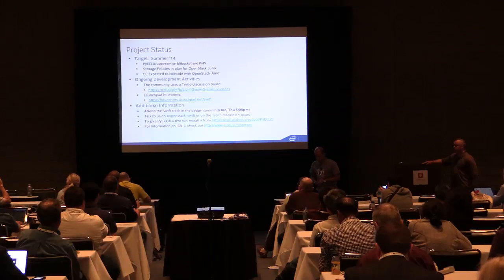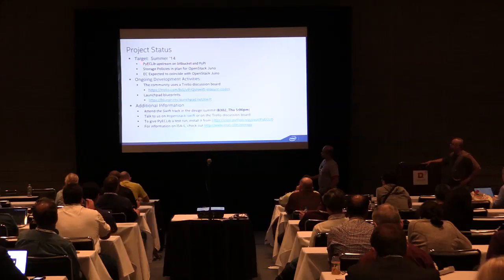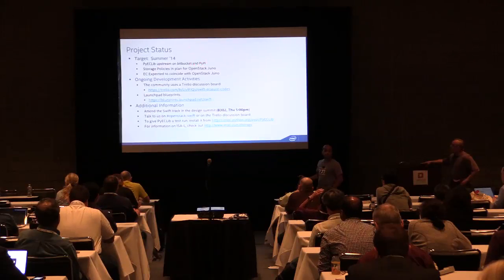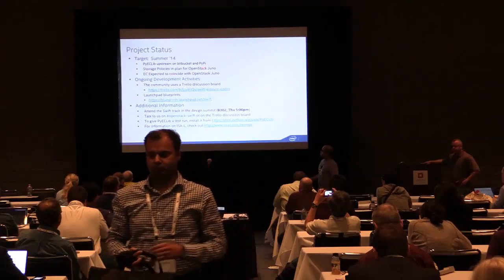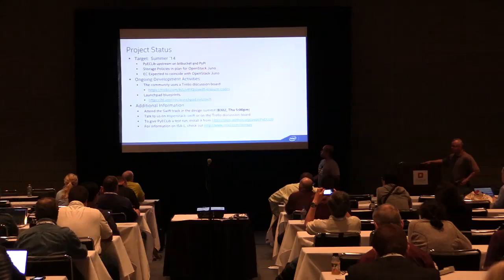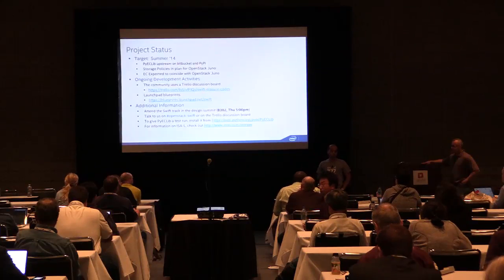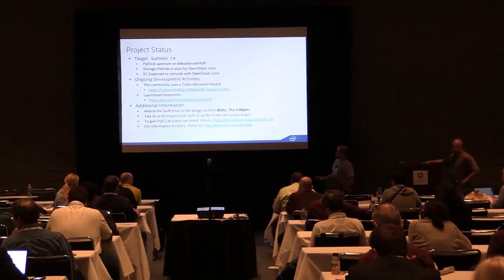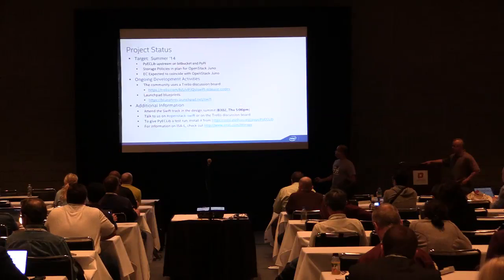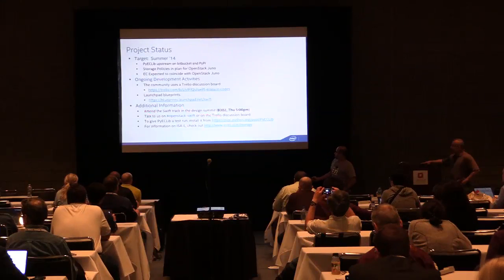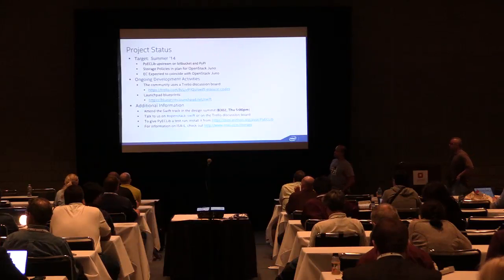Just summarizing project status: PyEclib — the Python EC interface library — is upstream on Bitbucket and PyPI, available for download today at version 0.9, which is stable enough to use. Storage policies are planned for inclusion in OpenStack Juno. Erasure coding is actively being worked on for the data path. There are design sessions this week at the Swift design track — you're welcome to join the session tomorrow at 5 p.m. There's also the OpenStack Swift IRC and a Trello discussion board for erasure code design. The blueprints are available for comments and contributions.